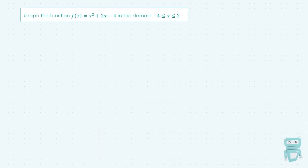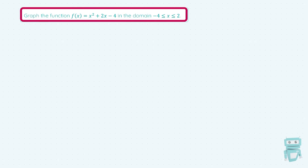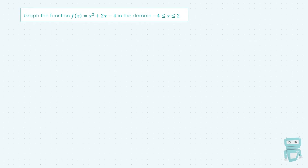Now let's see how these questions are asked. I'm told to graph the function f of x equals x squared plus 2x minus 4 in the domain x is less than or equal to 2 and greater than or equal to minus 4. Just a reminder that the domain is the set of x values or inputs for your graph — the x-axis is going to go from minus 4 all the way up to 2.